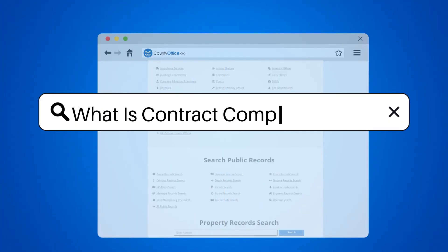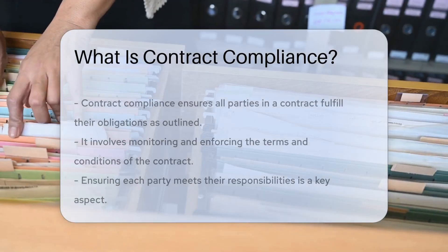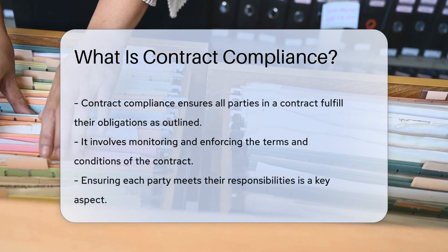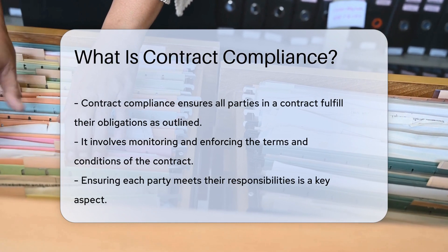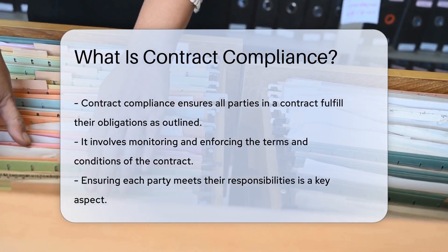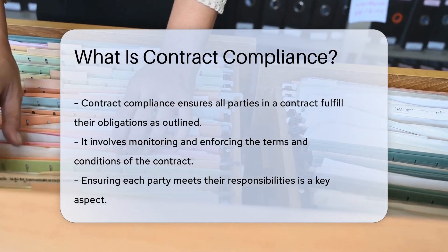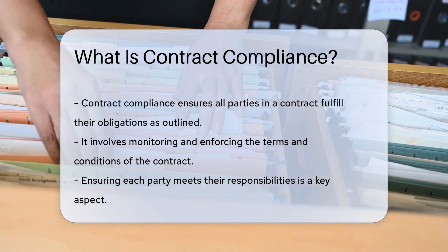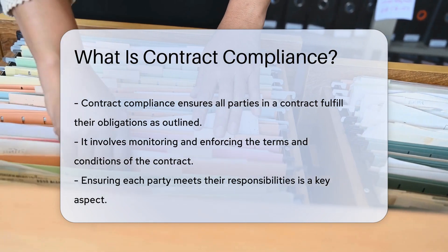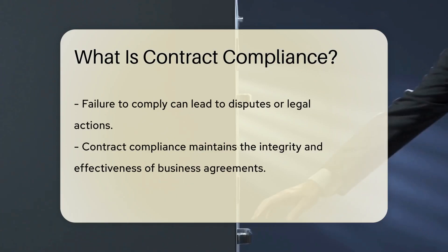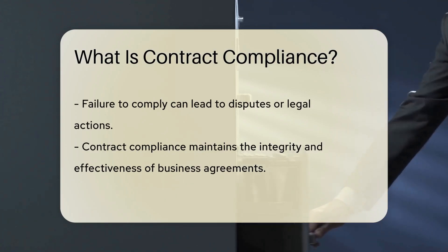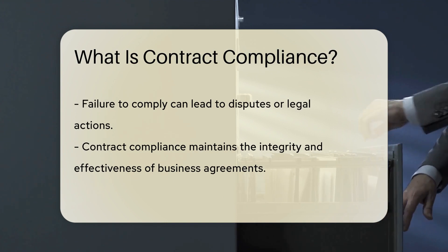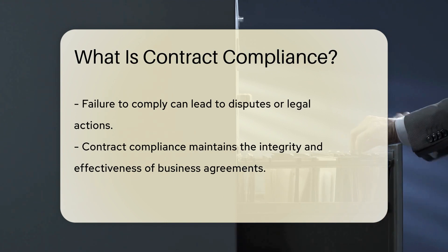What is contract compliance? Contract compliance refers to ensuring that all parties involved in a contract fulfill their obligations as outlined in the agreement. It involves monitoring and enforcing the terms and conditions set forth in the contract to ensure that each party meets their responsibilities. Failure to comply with the terms of a contract can lead to disputes or legal actions to resolve the issues.